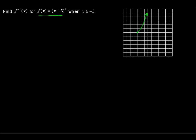It goes up pretty steeply there. I'm not going to draw the other half of the parabola because I have this restriction — x is greater than or equal to negative 3 — so we're just going to limit this parabola, or cut it in half if you want to say it.